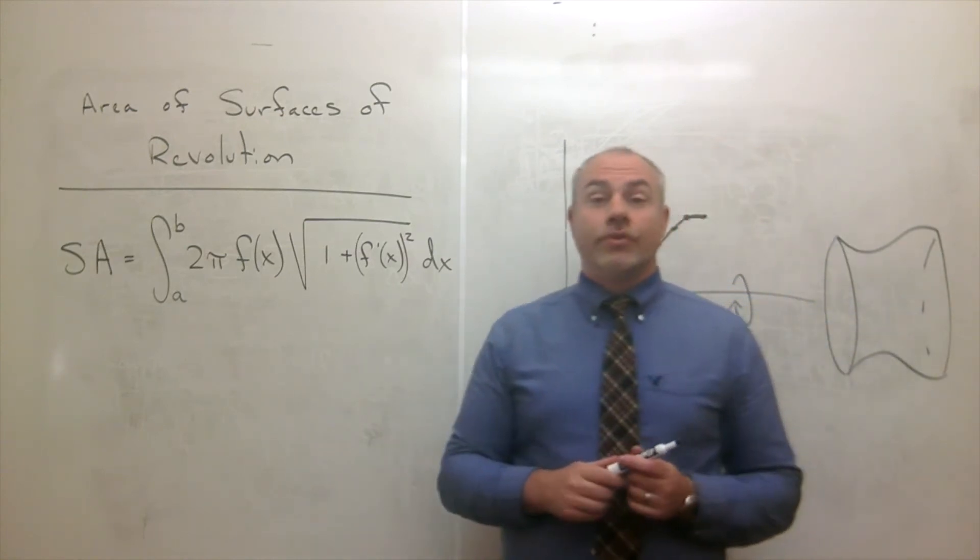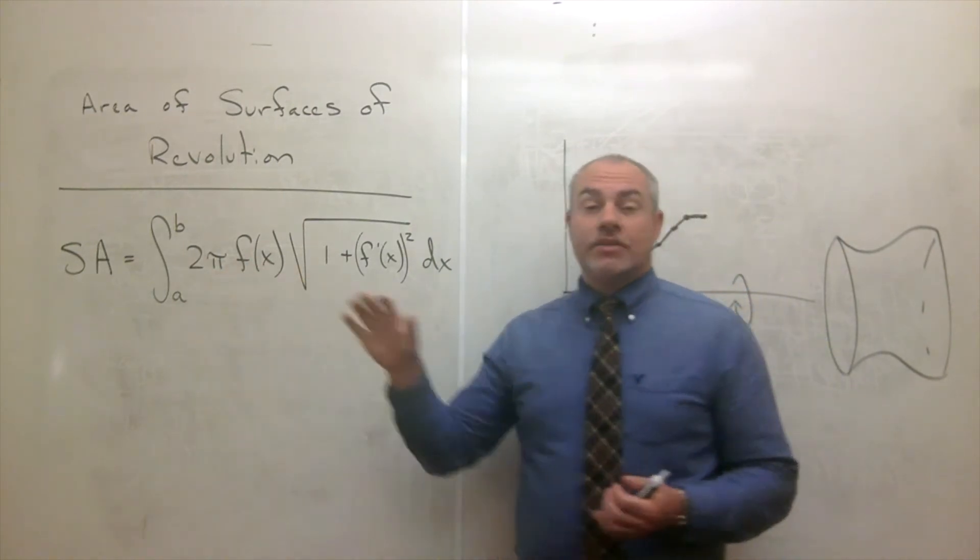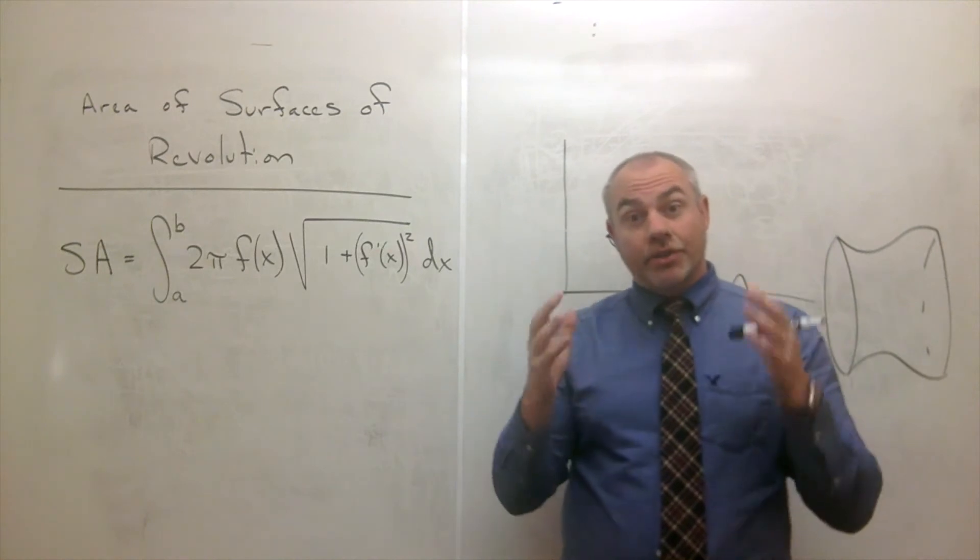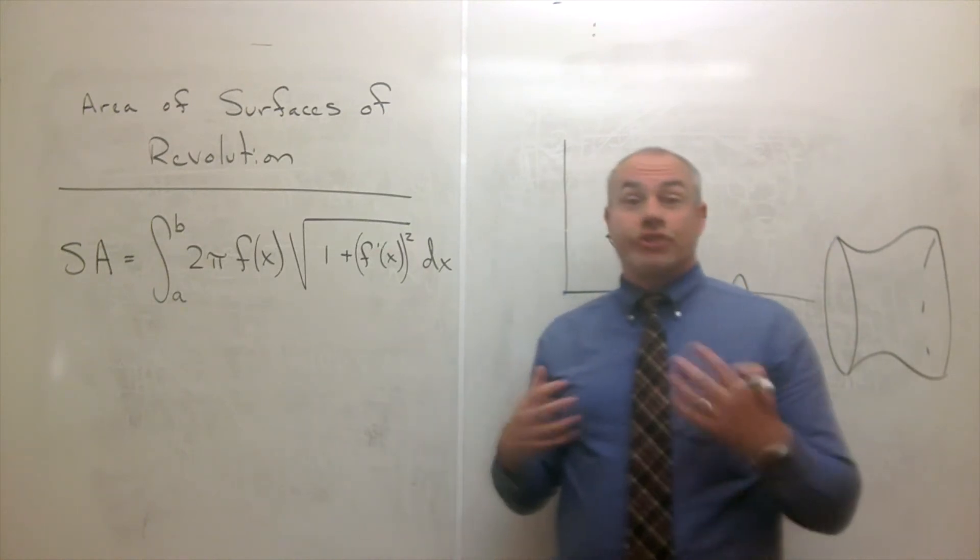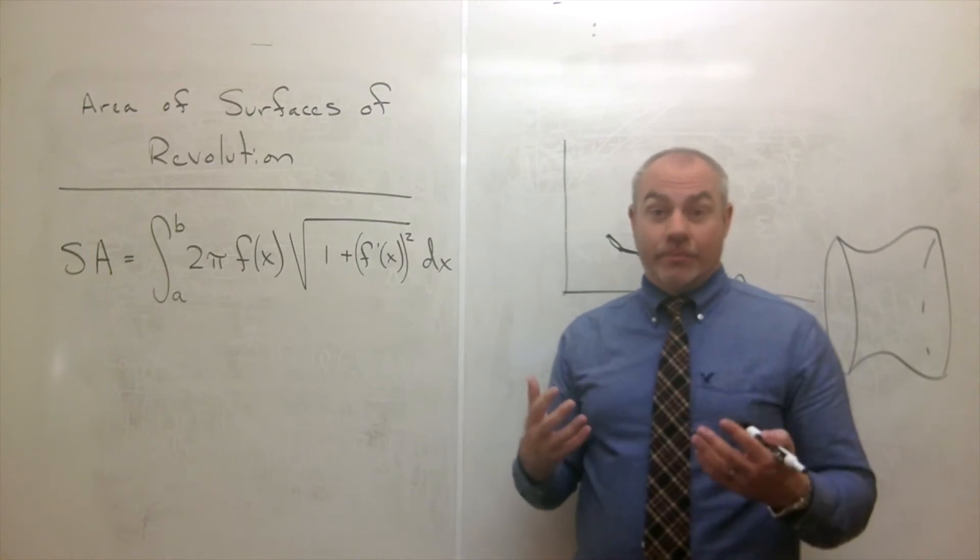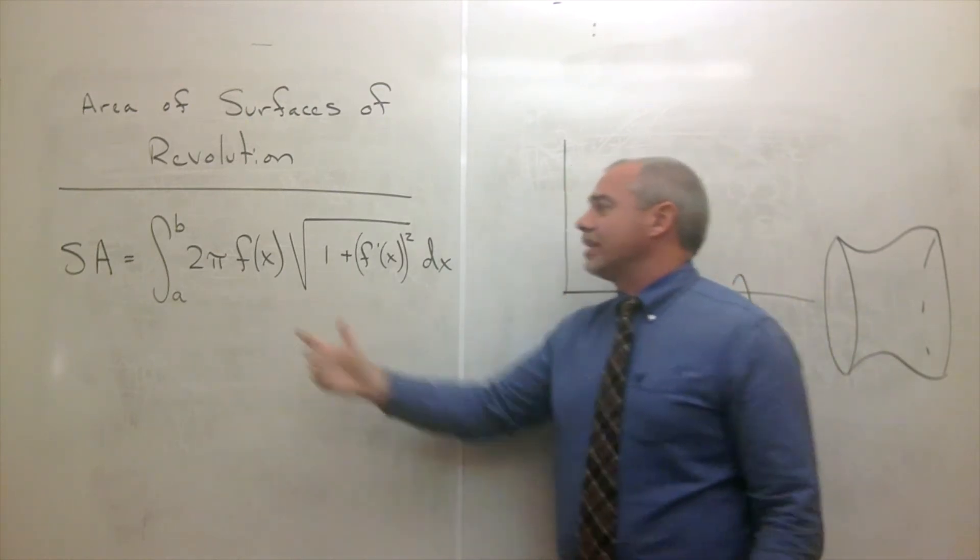So I'm not going to reprove surface area to you right now. But I would like you to look in your book and actually look through a proof for surface area. You should be able to follow it now that you followed my proof for arc length. And you see that you get this formula.